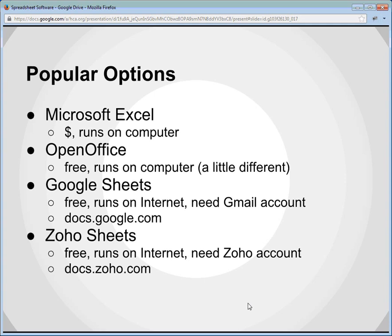The next option, which you're going to see me use most often, is Google Sheets. Google Sheets is a spreadsheet run through Google Docs or Google Drive. It is free, and the real benefit is that it runs on the Internet — you do not need to download or install any software. All you need is a Gmail account; go to your Google Drive and you can create a Google Sheet. We are encouraging our students to explore Google Docs options: Google Docs for word processing comparable to Word, and Google Sheets comparable to Excel.